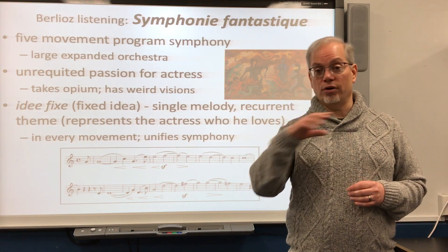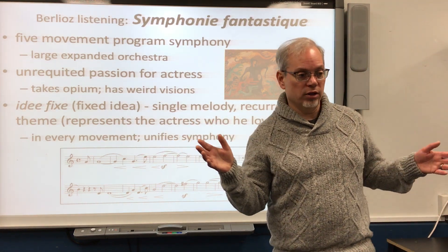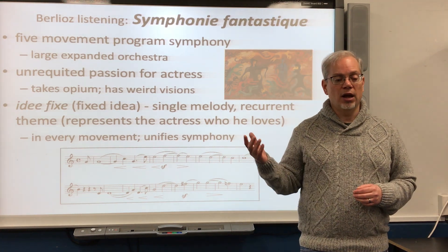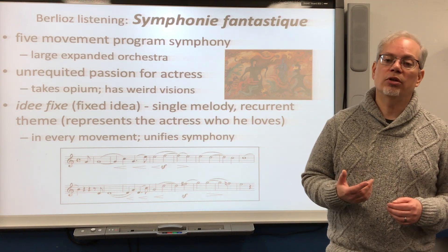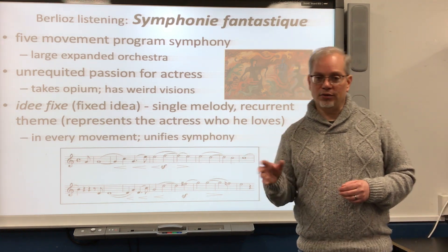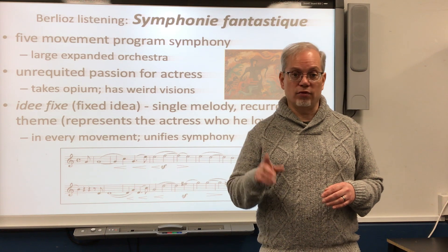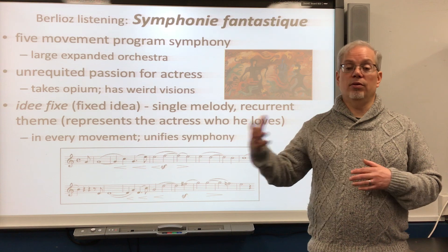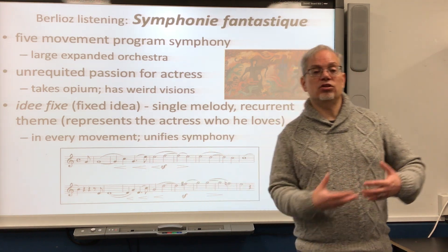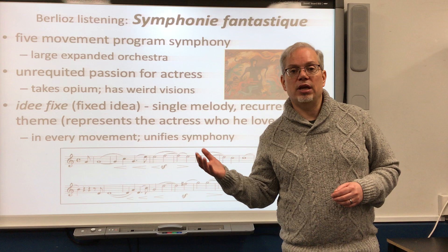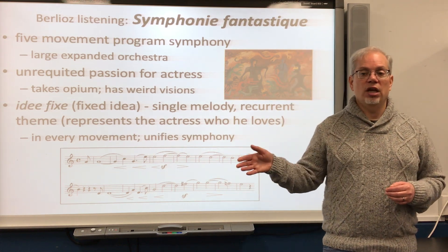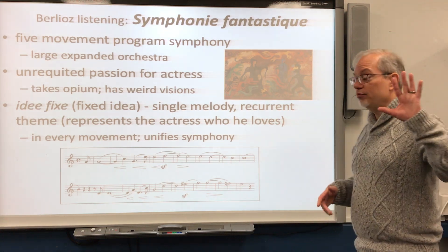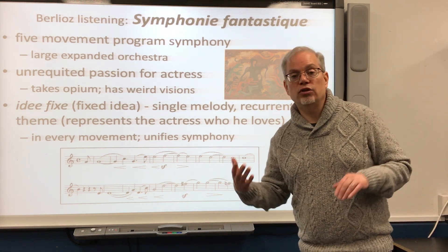He turned this into music by writing his Symphonie Fantastique. The program for this symphony is that a brilliant young artist — who is, of course, Berlioz — is rejected by his beloved, and in a fit of despair decides to commit suicide by taking opium. That's not autobiographical; Berlioz loved himself too much to kill himself. But in the program for the symphony, taking this opium casts him into a deep sleep where he has a series of visions. Each one of these dreams corresponds to a different movement of the symphony.